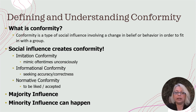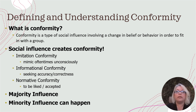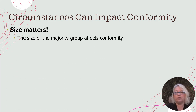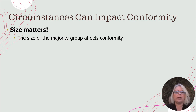But minority influence can happen. When someone is knowledgeable and has power and authority, a minority decision or behavior can impact and change the group — but it depends on how the people in the room perceive that person. Circumstances can impact the likelihood that we'll conform, and size matters. The size of the majority group affects conformity. If there are three of you and two want to ride a roller coaster while one does not, you are less likely to be persuaded by the majority.